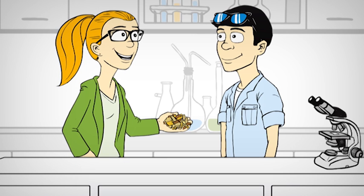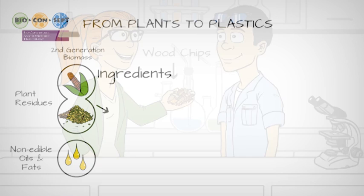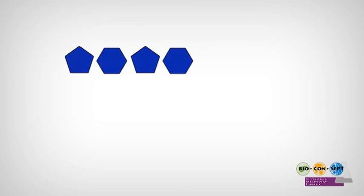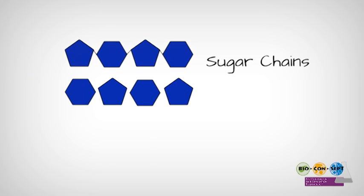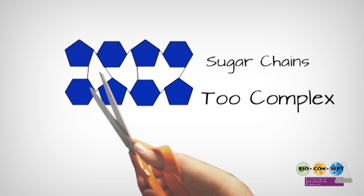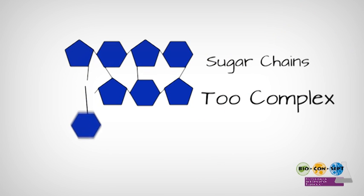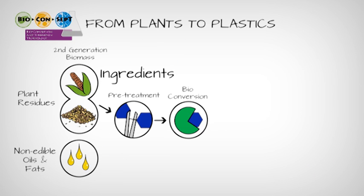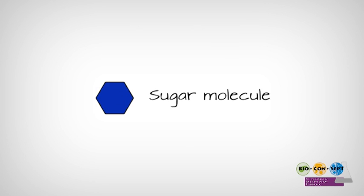Let's start with the plant residues — for example, wood chips. They have to be pre-treated first. Wood mainly consists of sugars in the form of sugar chains. These chains are connected to more sugar chains, making them very complex, which is why they cannot be used yet. We need the single sugar molecules, so the connected chains have to be broken up. This step is called pre-treatment.